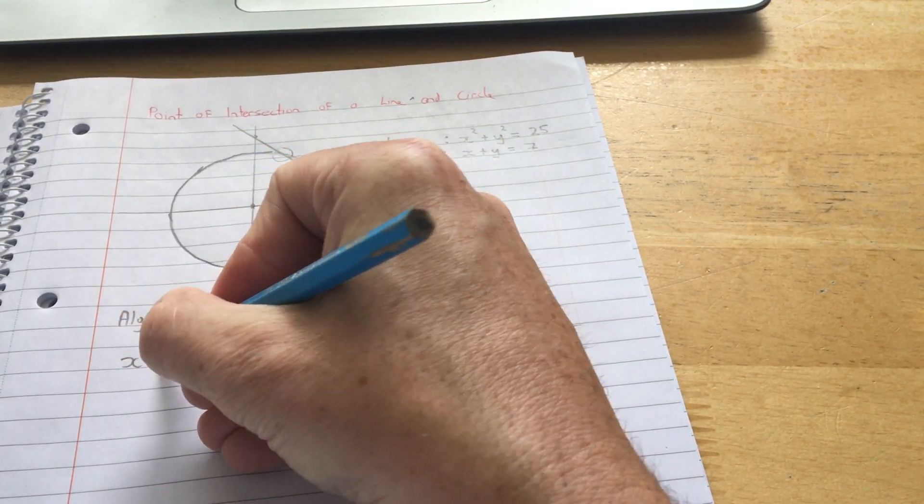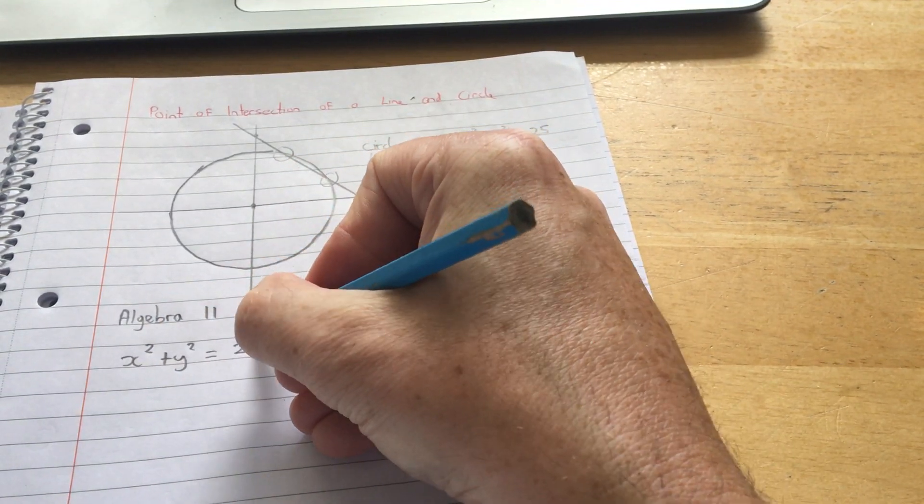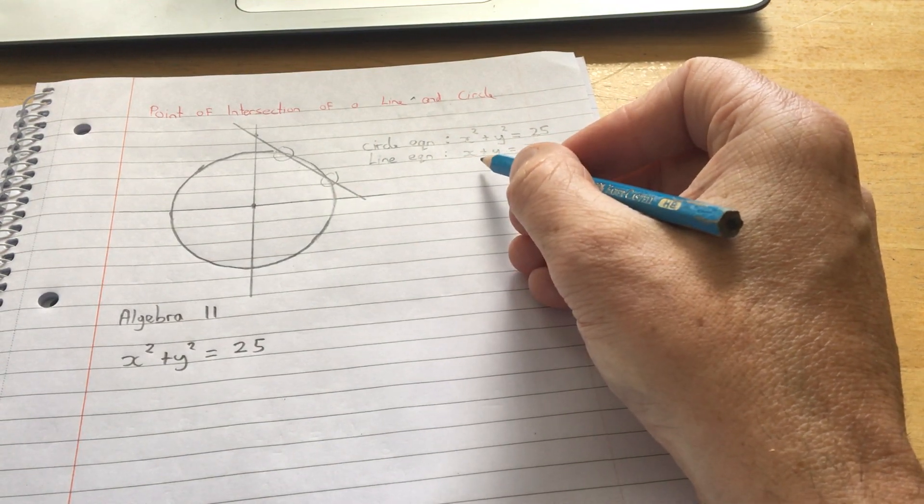You have the equation of the circle, x squared plus y squared equals 25. Then you've got the equation of the line, x plus y equals 7.